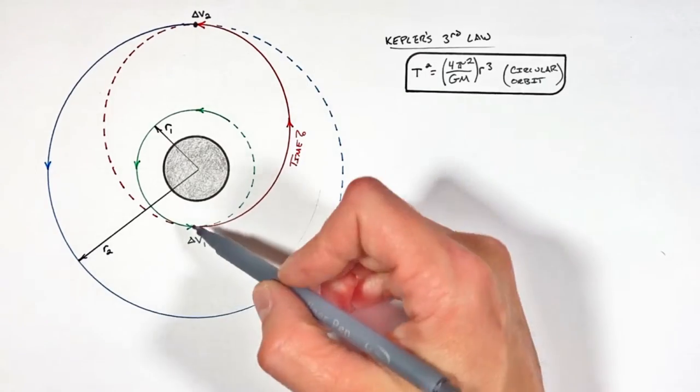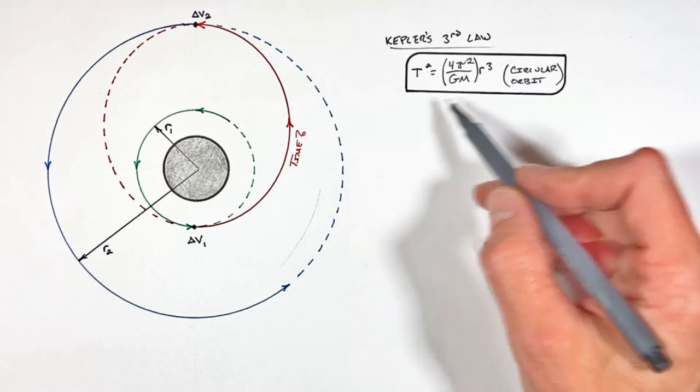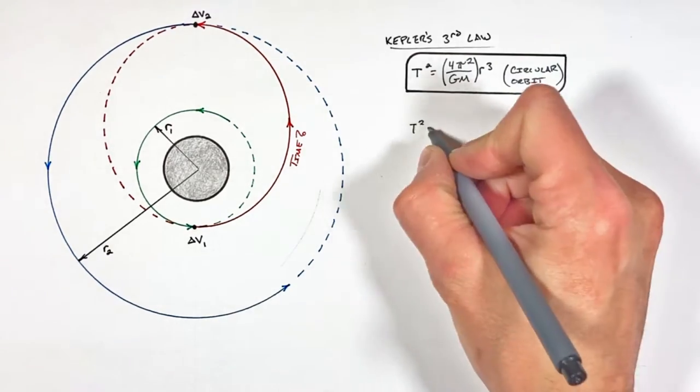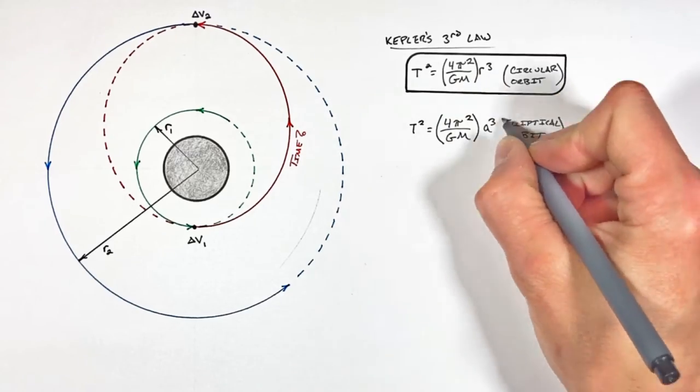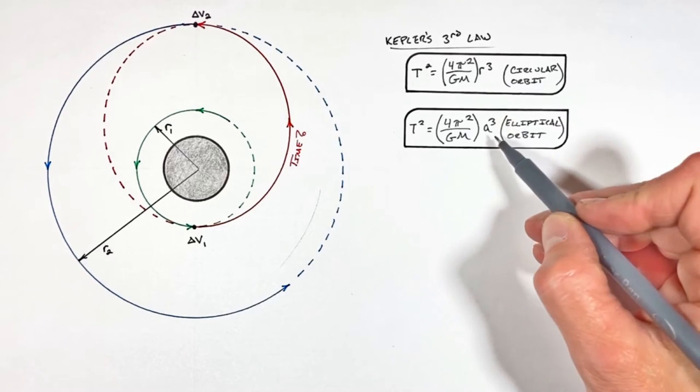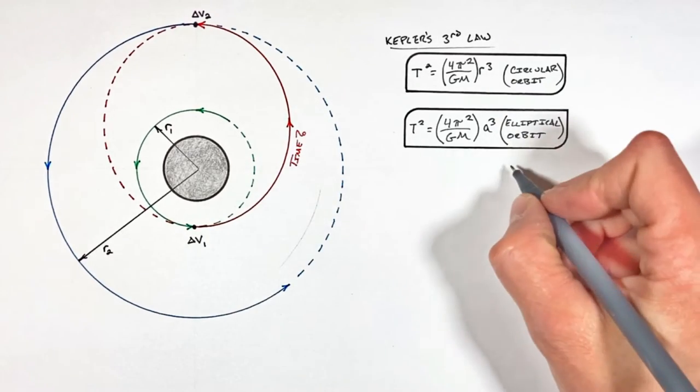The catch is what we're worried about is this Hohmann transfer, which is elliptical. So Kepler's third law needs to be written not for a circular orbit, but for an elliptical orbit, where we simply replace the radius of circular orbit for the length of what's called the semi-major axis of this ellipse.